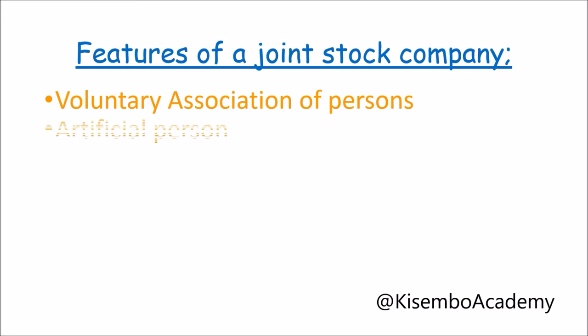Another characteristic is that of an artificial person. A company is an artificial person according to the law. Like a natural person, a company can do certain things like owning property in its name, entering into contracts, borrowing or lending money. It can also sue and be sued. So a company is more of a person without a soul.